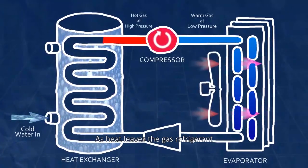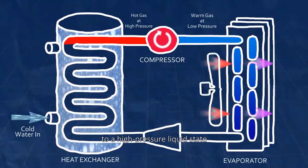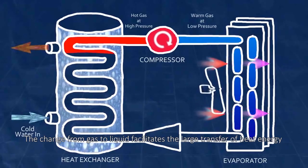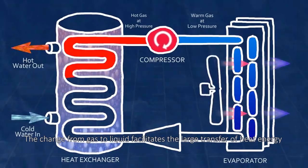As heat leaves the gas refrigerant, it cools off below its condensation point and changes from a gaseous state to a high pressure liquid state. The change from gas to liquid facilitates the large transfer of heat energy to the water.